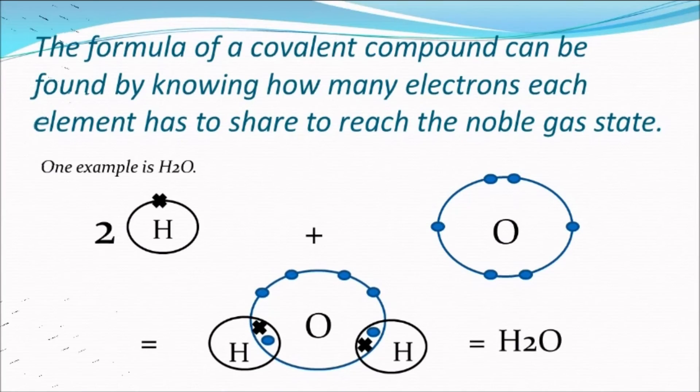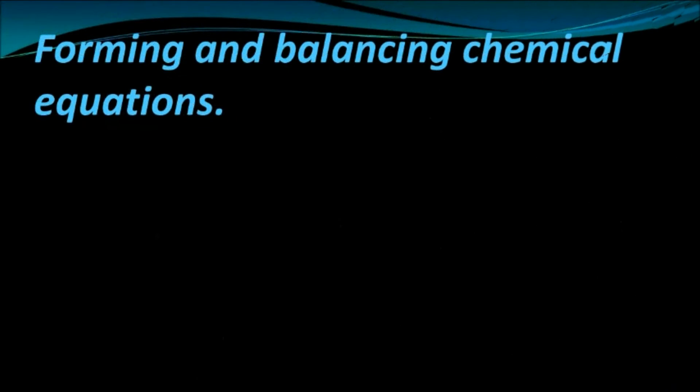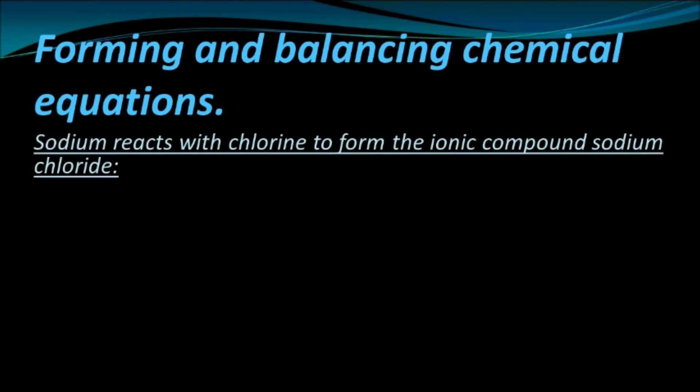Now it's about how to form a chemical equation and how to balance one. The structure of an equation depends on the substances reacting. So if a metal reacts with a non-metal to form a compound, it would be an ionic compound, and that's just one example.